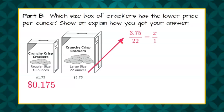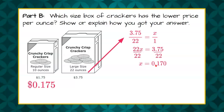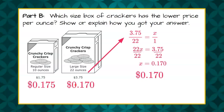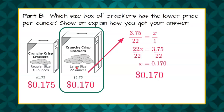We know that it costs $3.75 for 22 ounces, and we want to know how much per ounce. So cross product property: 22 times X is equal to $3.75. Divide both sides by 22, and X is equal to 0.170. There is an insignificant zero here, so it's just 17 cents as our answer. But to compare, we are going to keep it to the thousandth digit because we are asked which size box has the lower price per ounce. We can identify that the large size is less.